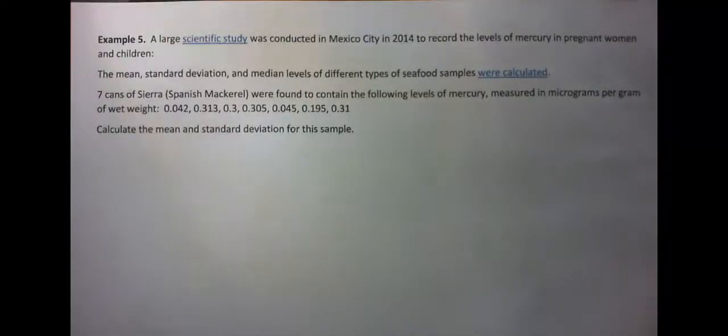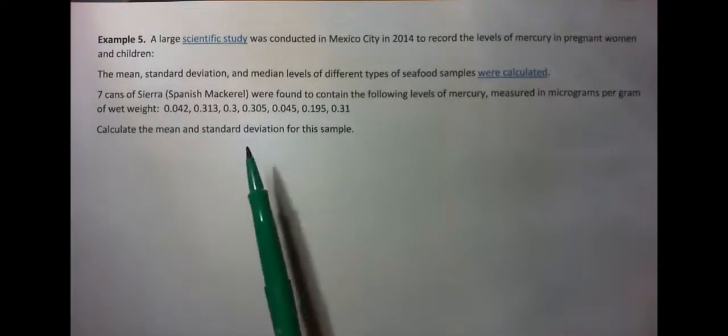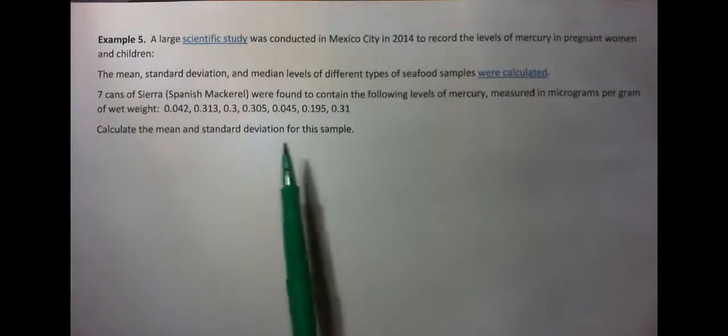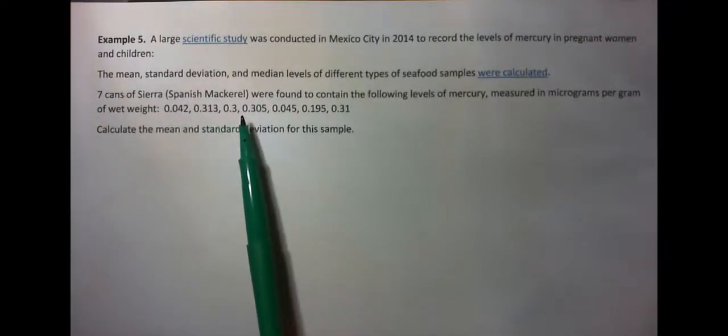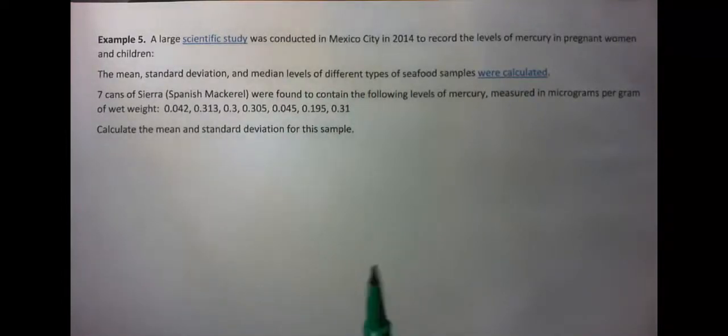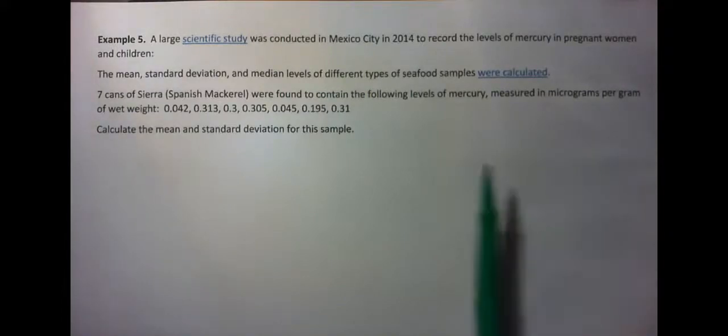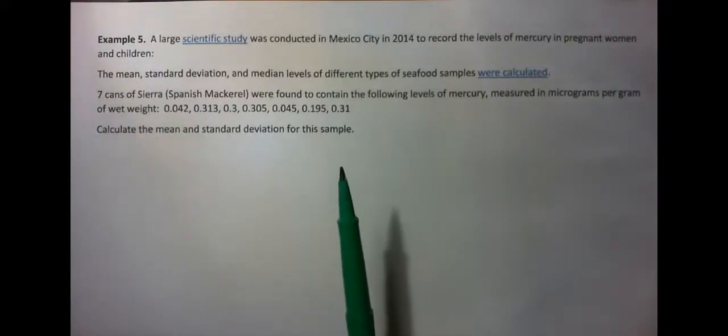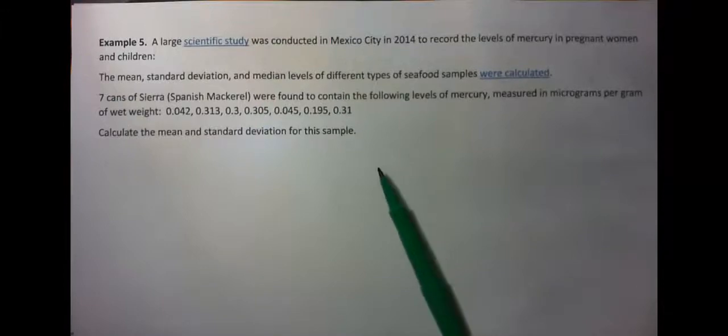Example 5 is going to look at mercury levels in fish. We're going to get a list of seven numbers and we simply calculate the mean and standard deviation. I just want to show you what the scientific study is so that you actually believe me and you can see a real life application of this.